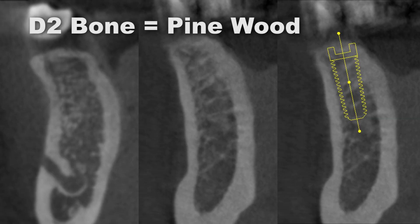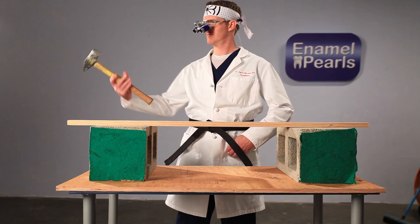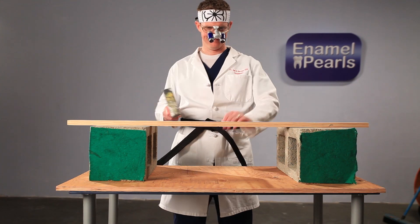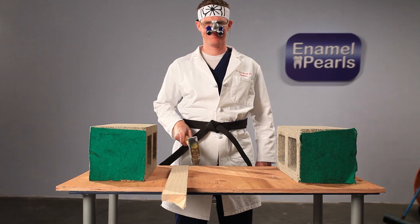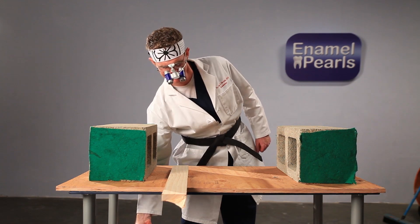D2 bone is like the density of pine wood. This is our ideal bone density because we have a nice cortical plate with dense but vascular trabecular bone. Drilling into D2 bone is smooth, and implants have a nice fixation in D2 bone. D2 bone is also found in the anterior maxilla and mandible, as well as premolar areas.